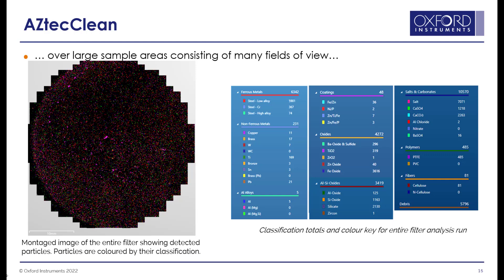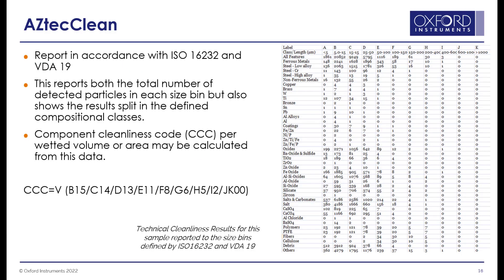Images on the left show a montage of the large area image, and the classification totals for all particle types are shown on the right. Particles are colored by their classification. The results are easily reported in accordance with ISO 16232 and VDA19, including the generation of component cleanliness codes. This reports the total number of detected particles in each size bin, and also shows the result split into defined compositional classes. Component cleanliness code per volume or area may be calculated from the data.